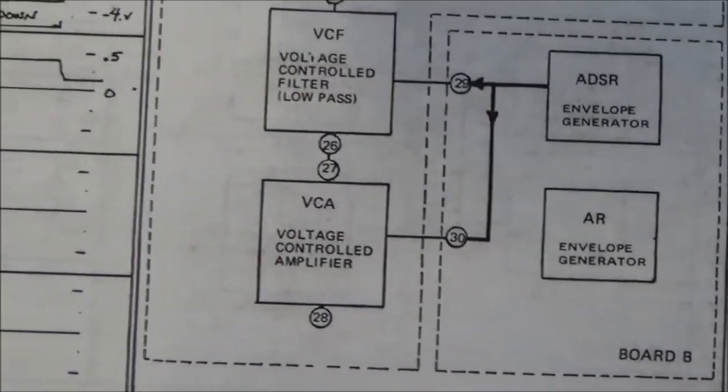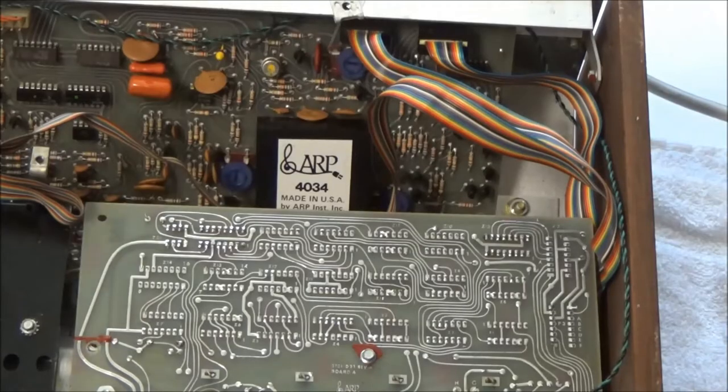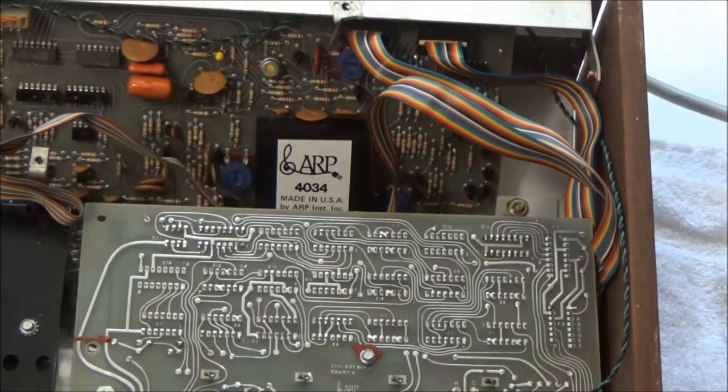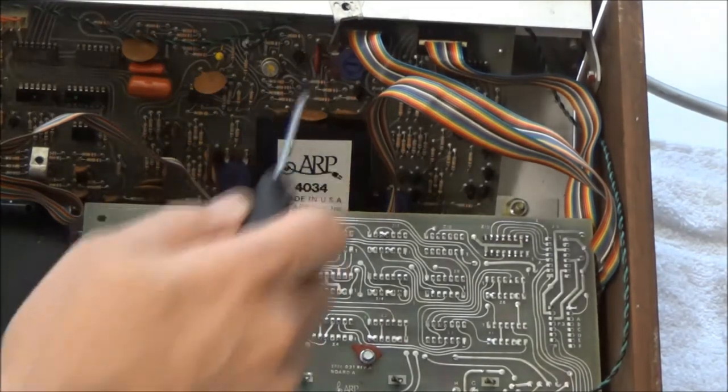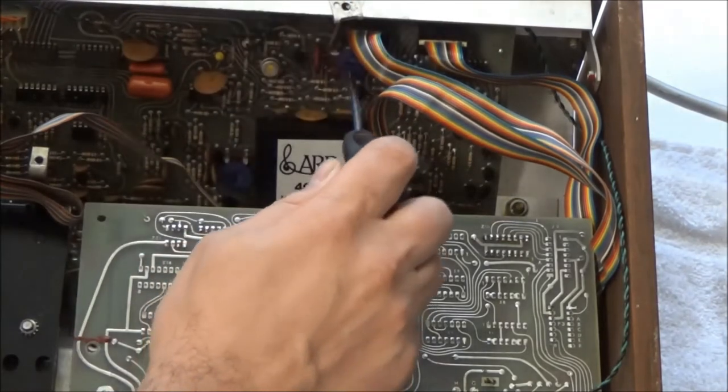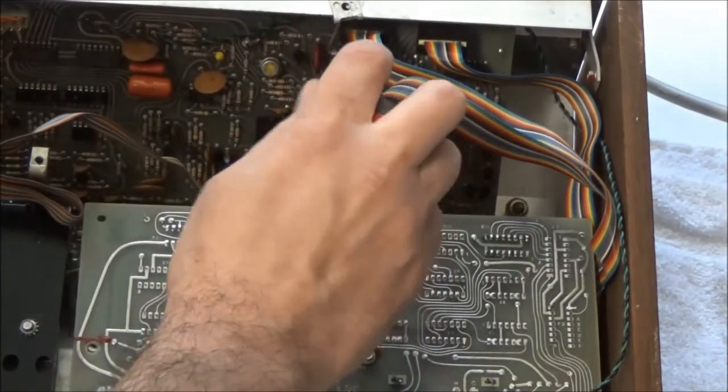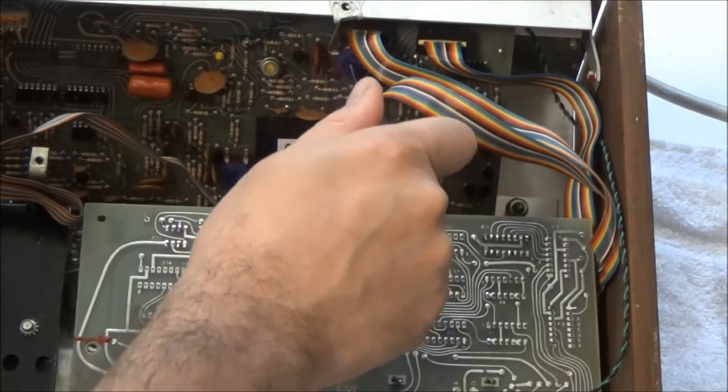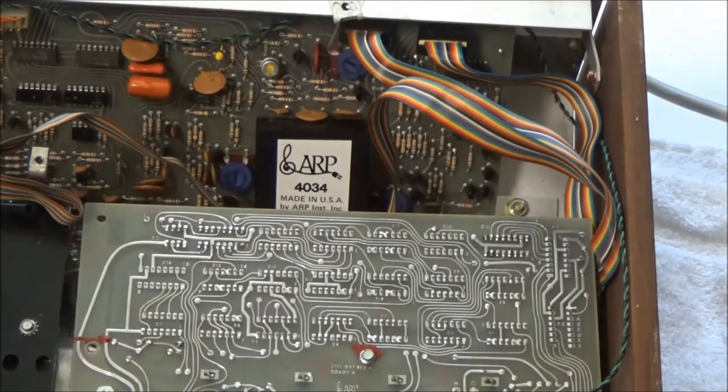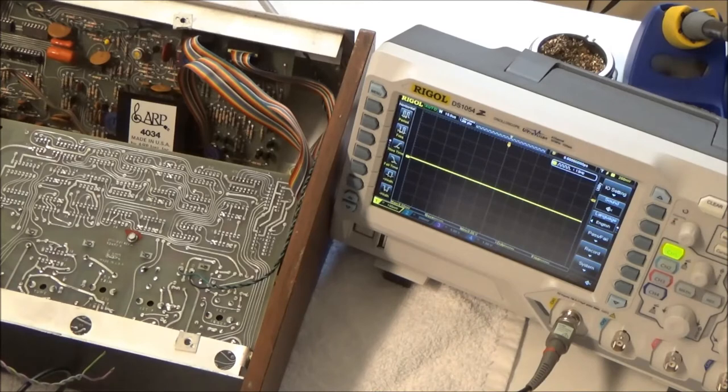Before I do any probing with the oscilloscope, I'm going to see if I can quiet this down simply by adjusting that control voltage reject trimmer, which is located right here under this ribbon cable. I turn the full range of the trimmer and it doesn't make that go away. So that trimmer is not going to help us out here.